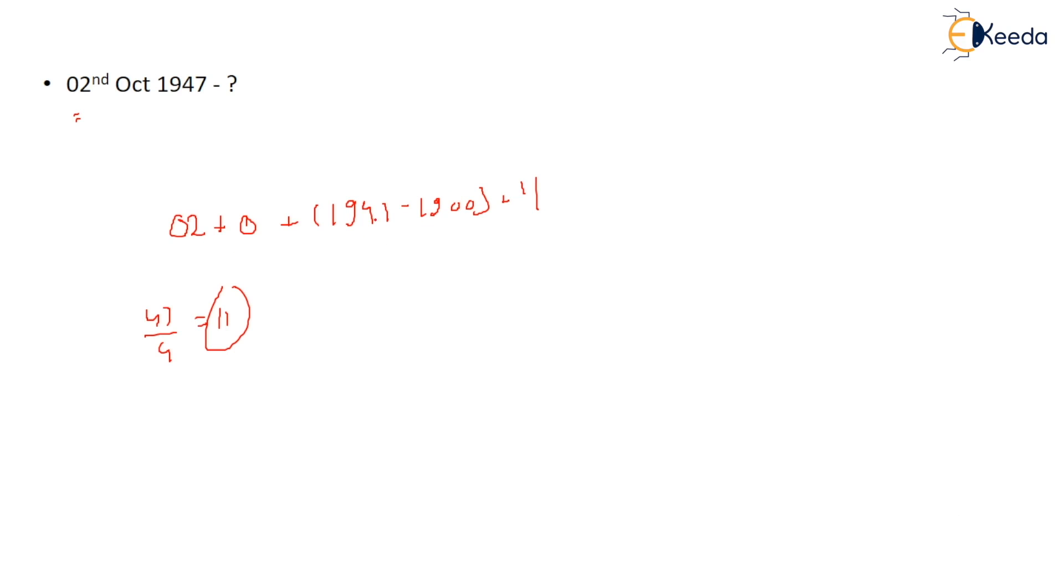So this comes out to be 2 plus 47 plus 11, that's 60. 60 plus 2 is what? 60, 60 divided by 7.